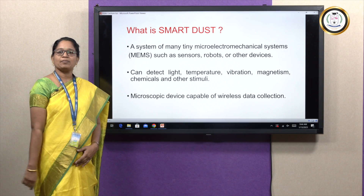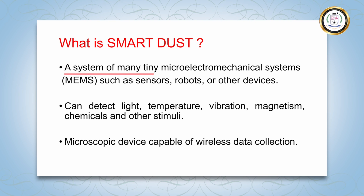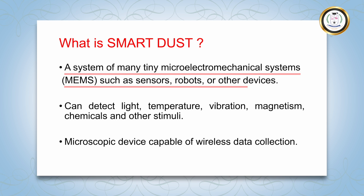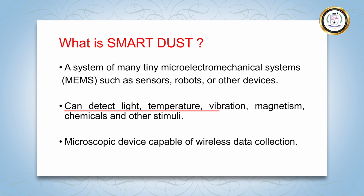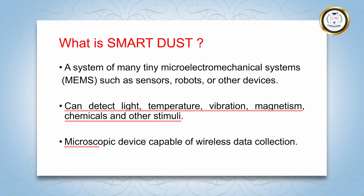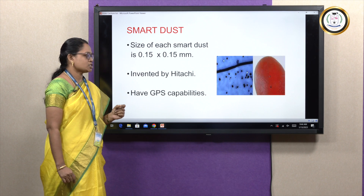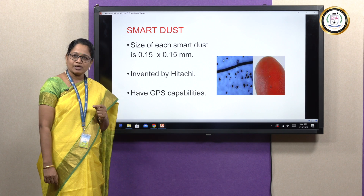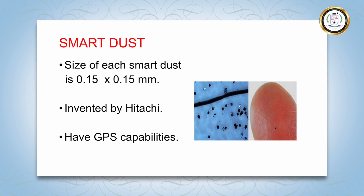Now, let us discuss an important application of IoT that is SmartDust. What is SmartDust? It is a system of tiny micro-electro-mechanical systems such as sensors, robots, or other devices. These SmartDust are also called motes. They can detect light, temperature, vibration, magnetism, chemicals, and other stimuli. It is like a microscopic device capable of wireless data collection. The size of each SmartDust measures just 0.15 by 0.15 millimeter, and each SmartDust has GPS capabilities. It was invented by Hitachi. In this photograph, you can see the picture of the SmartDust — look how tiny it is.